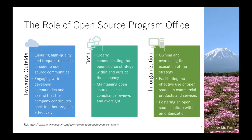Open source program offices have several roles, which are classified into outside, inside, and both. For outside, contributions to the OSS community are required. For inside, the open source program office promotes strategy and utilization of OSS, fostering open source culture. Additionally, it has a role to communicate between outside and inside, and it maintains compliance related to OSS.